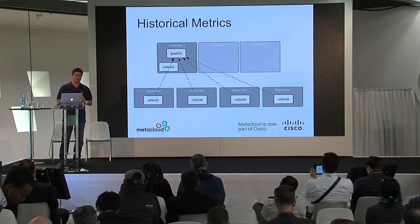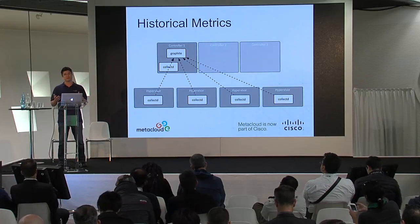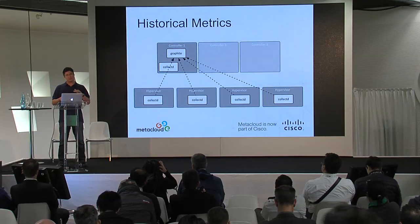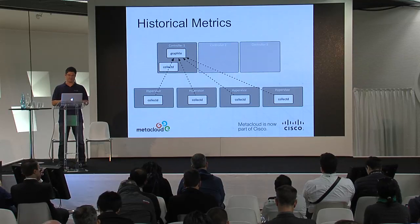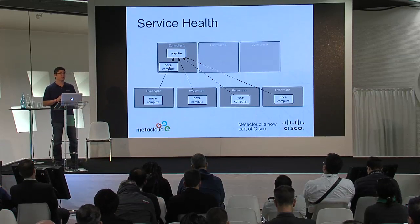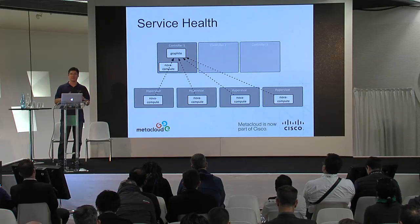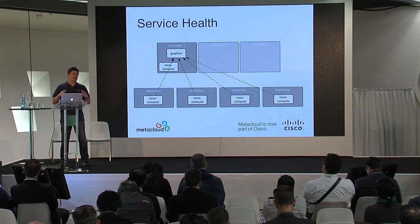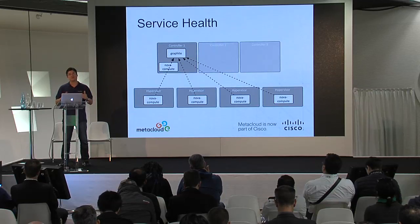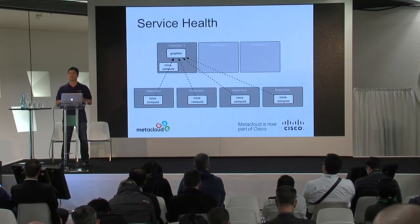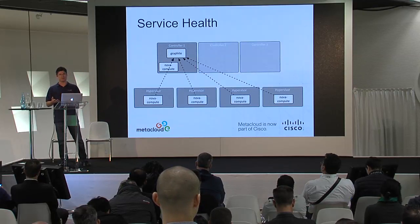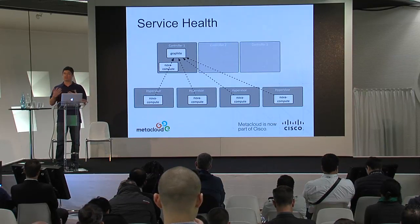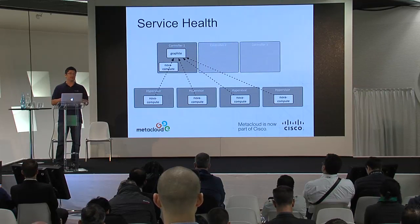We also instrument the cloud for historical metrics. We have CollectD running on each of our nodes, which collects a large amount of information about the system. CollectD stores all of that data in a centralized Graphite database, and we can access that data historically — up to a year's worth of data. One of the new things we've been working on is service health. This feature instruments the OpenStack APIs so we can see how many requests per second are coming into the APIs and what the response time is for each. Being able to do dynamic or static thresholding on response times to give a measure of service health at any particular point in time is really valuable.